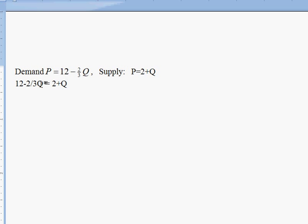If you wanted to solve this, the first thing I would probably do is subtract 2 from both sides to remove this 2 from the right-hand side. So we'd have 12 minus 2 minus 2/3 Q equals 2 plus Q minus 2. And so those 2s on the right-hand side will cancel. And we will end up with 10, 12 minus 2, minus 2/3 Q equals Q on the right-hand side.